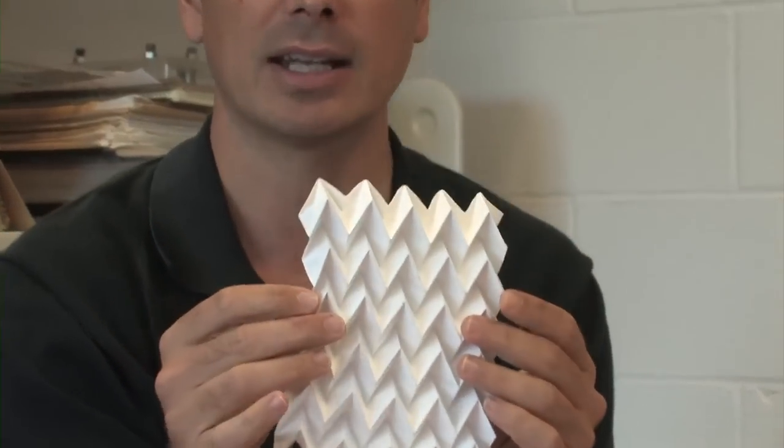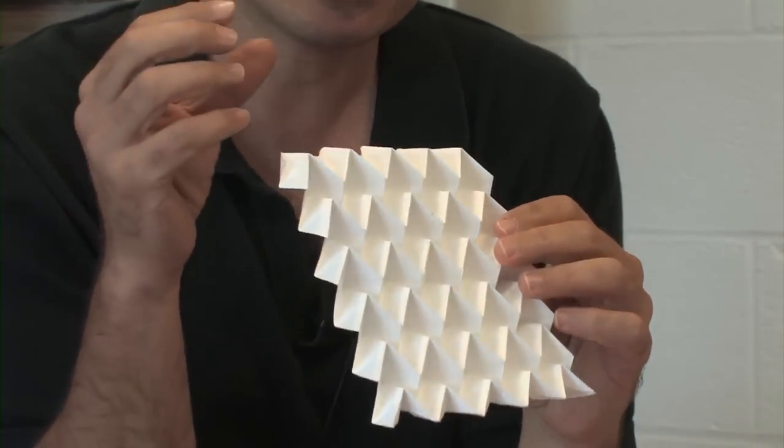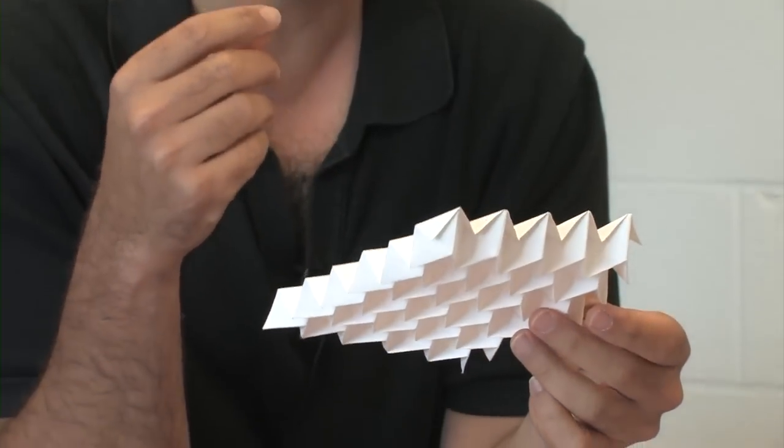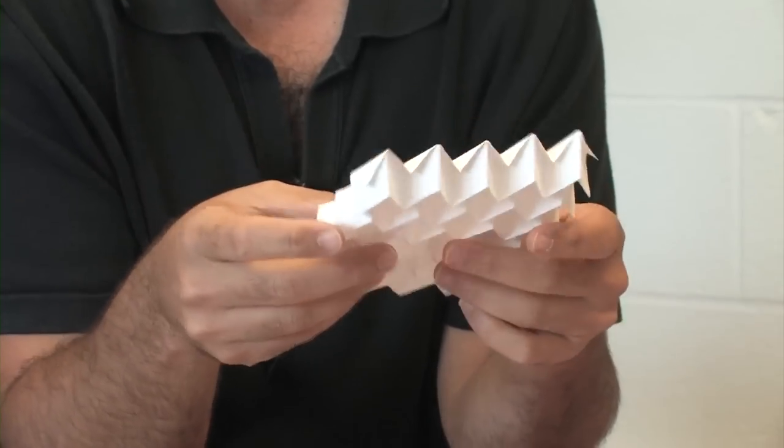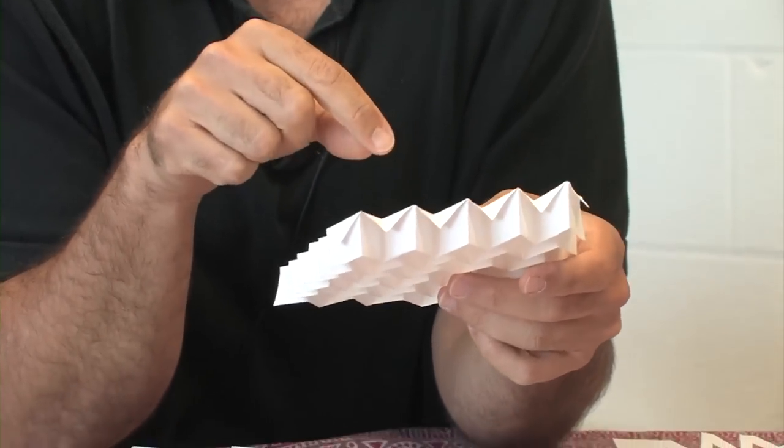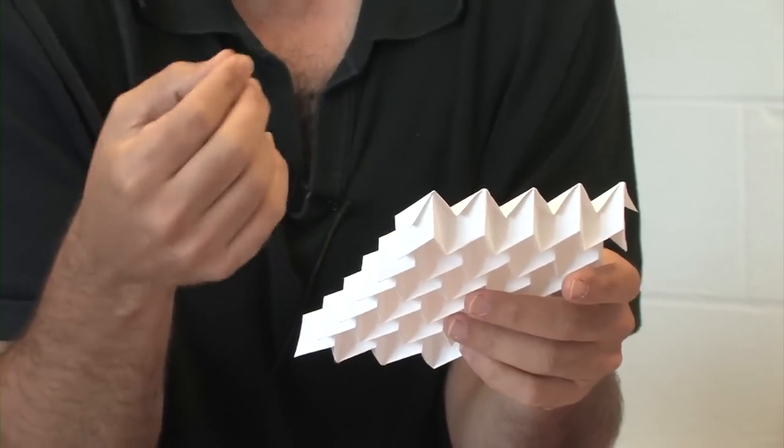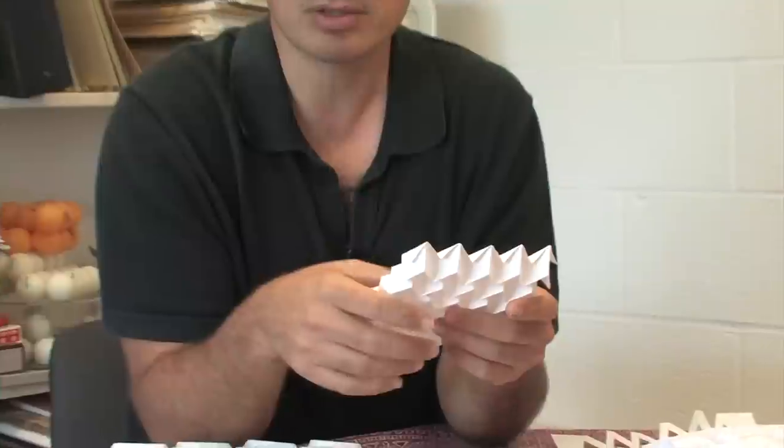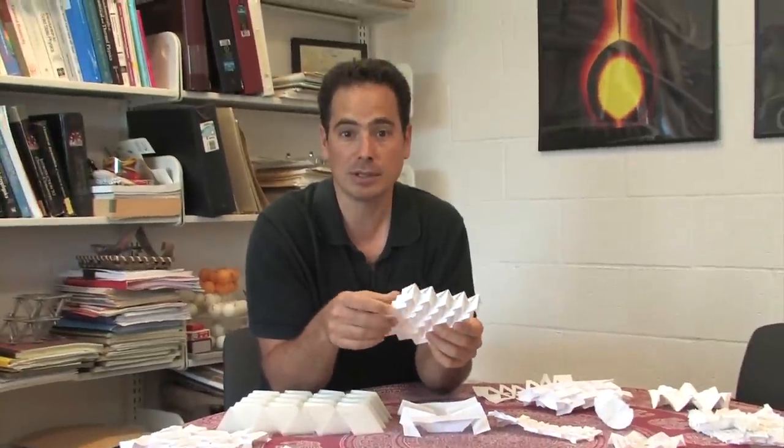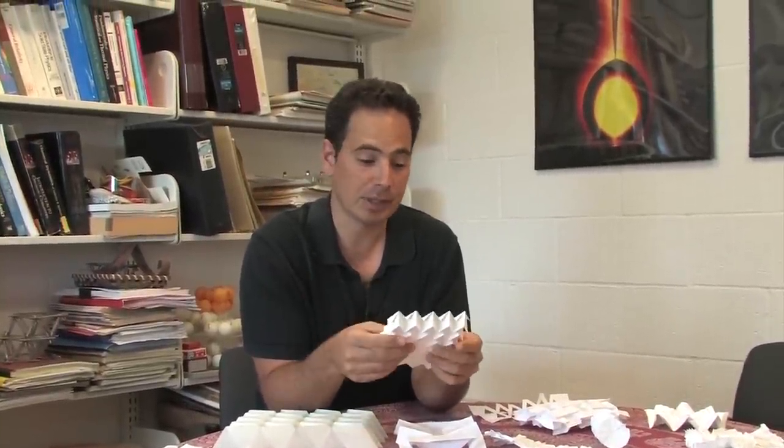So it has what's known as a negative Poisson ratio, and that speaks to what's so amazing about these materials. We can program in folding patterns that determine the mechanical properties and give us new properties, like this negative Poisson ratio, that we couldn't get with materials on their own.